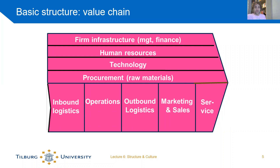So you add value throughout the chain: raw materials come in — let's say iron comes in and a car comes out. The car is more valuable than the raw materials because of the value you add within the organization.